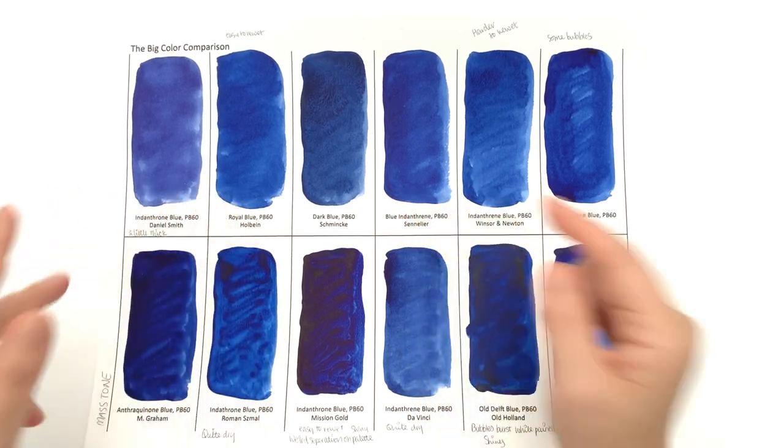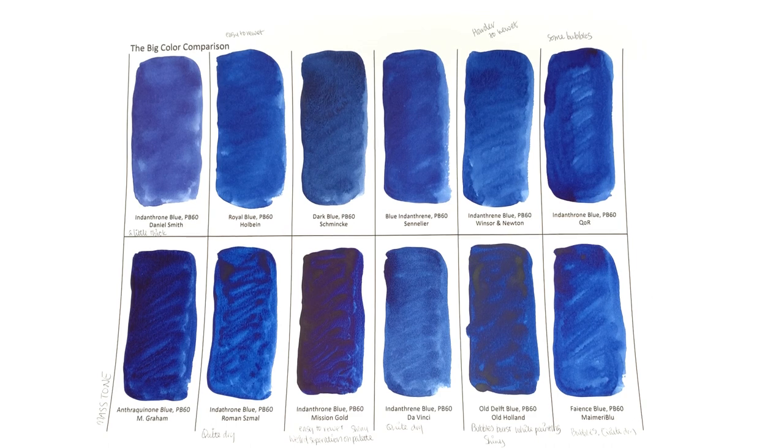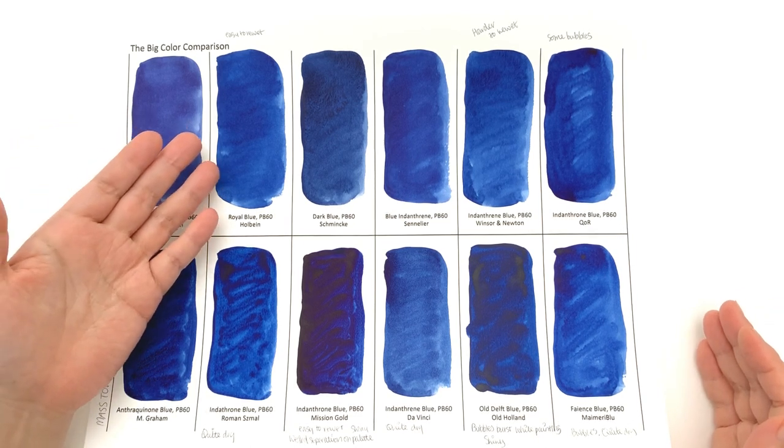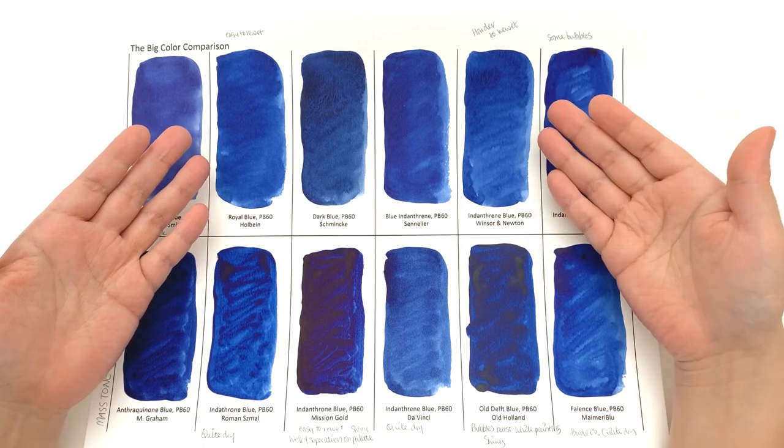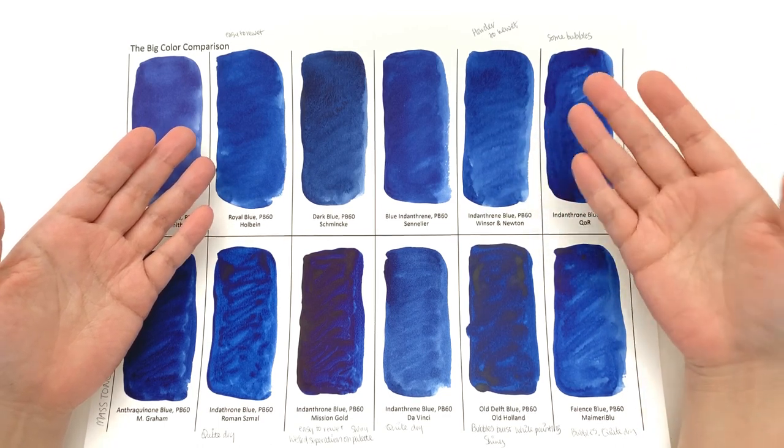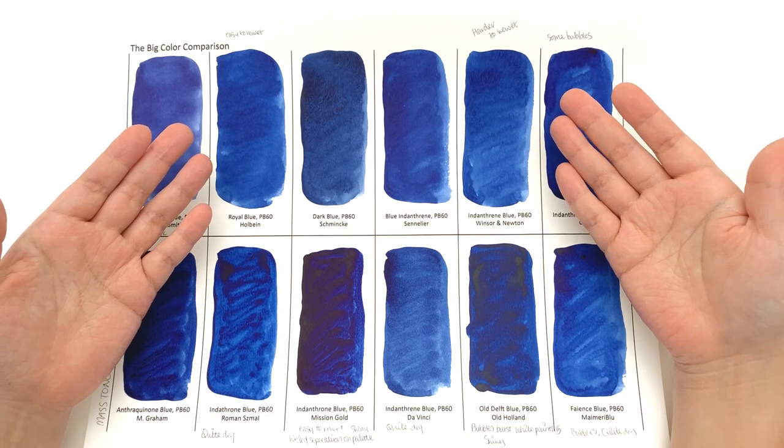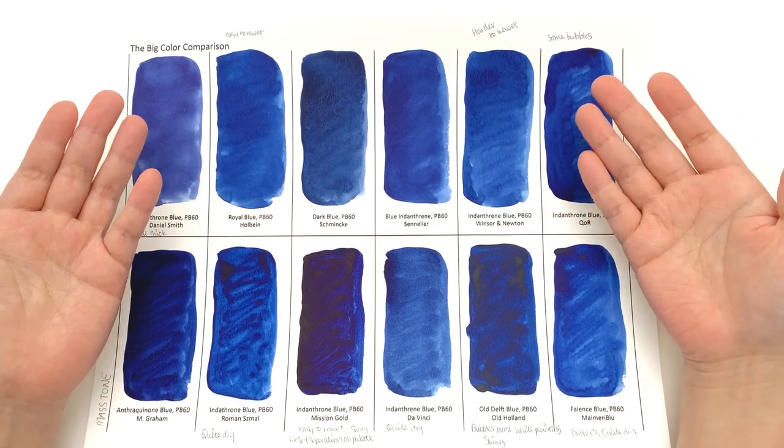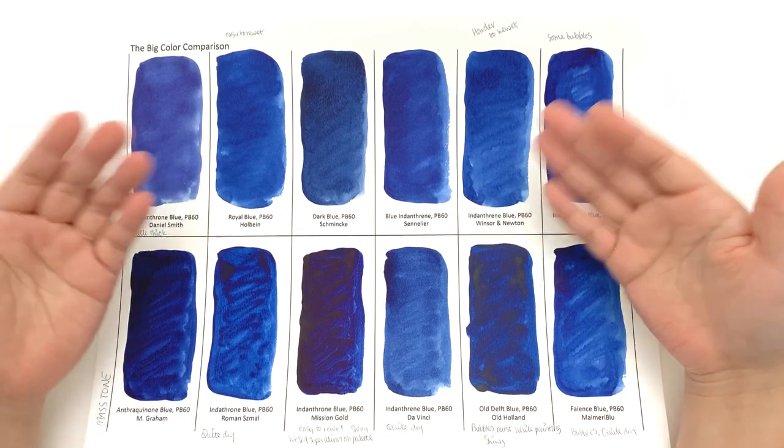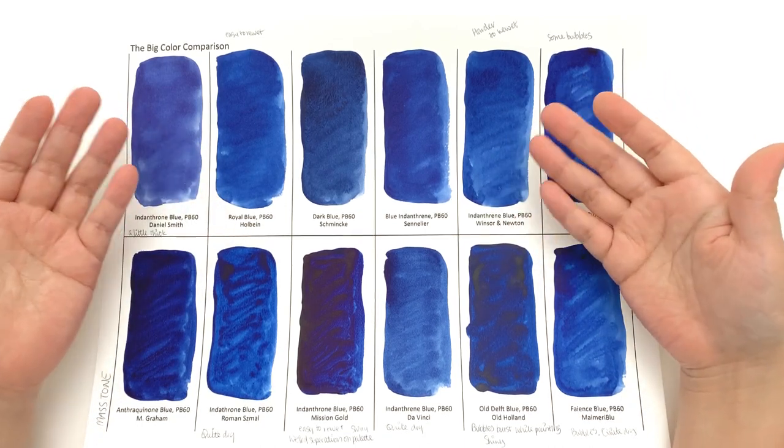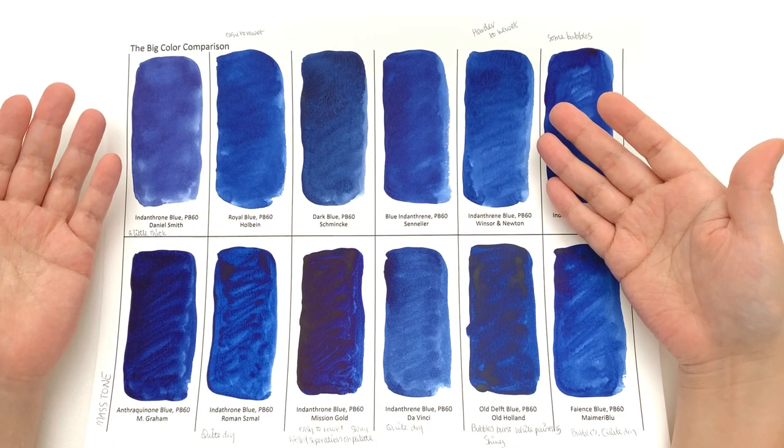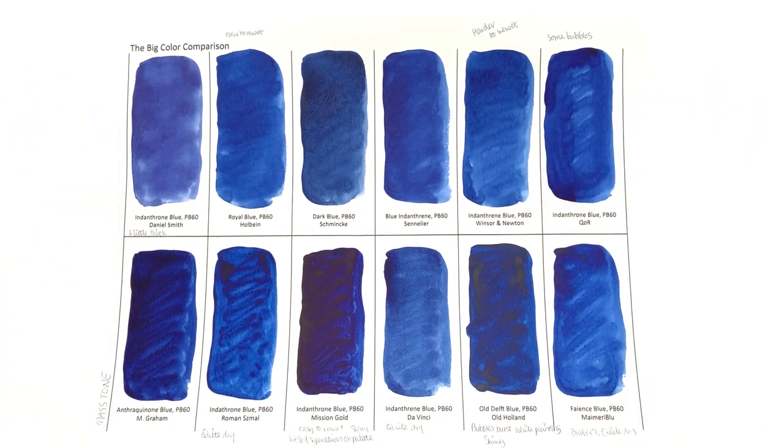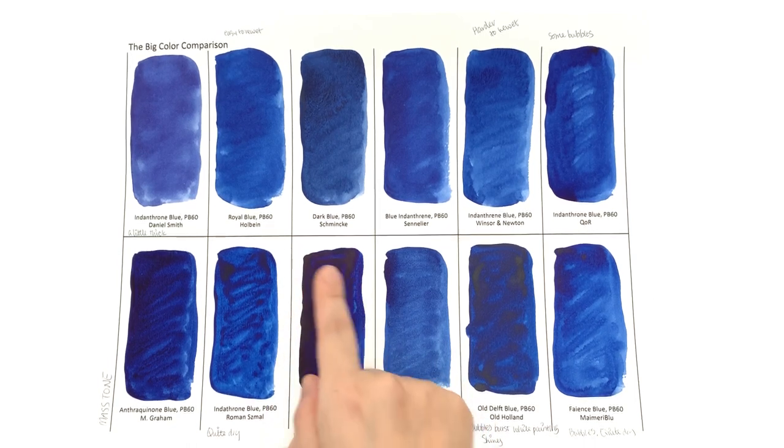In terms of rewetting, Holbein was very easy to rewet. Windsor Newton was harder to rewet. PB60 is always going to be pretty easy to rewet, so you're not going to have huge problems like you do with other pigments. However, if I were to compare Windsor Newton to other colors, I definitely noticed that it was a little bit harder to rewet. Mission Gold was easy to rewet, but again I probably wouldn't recommend you this based on how streaky and shiny it is.